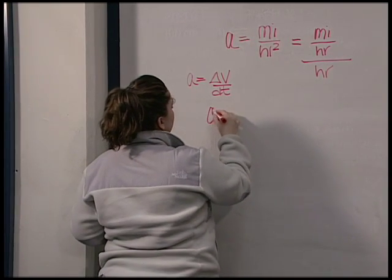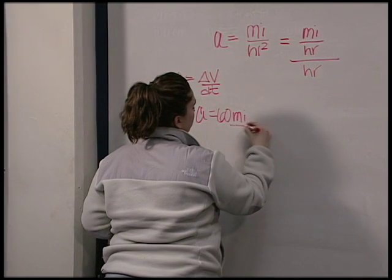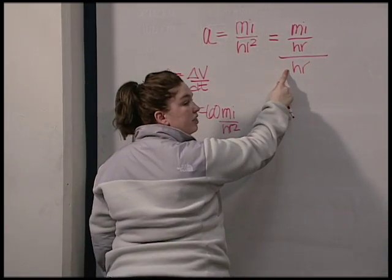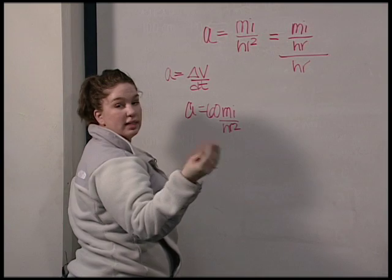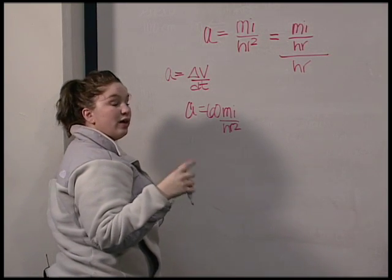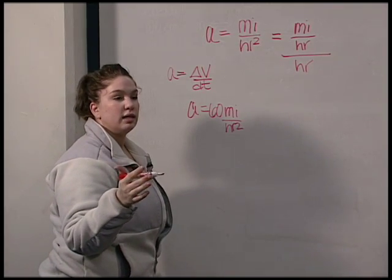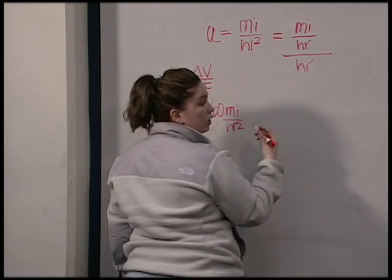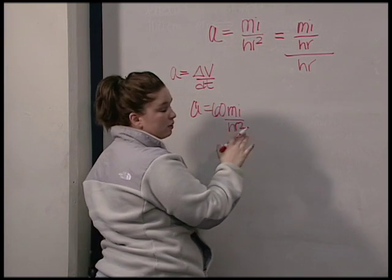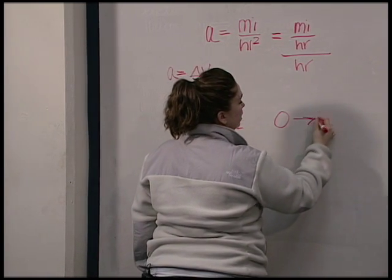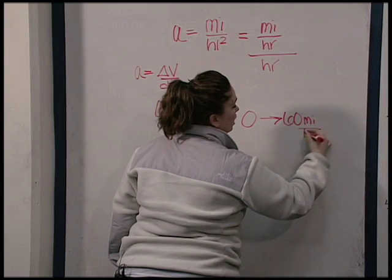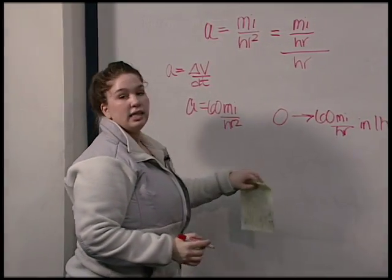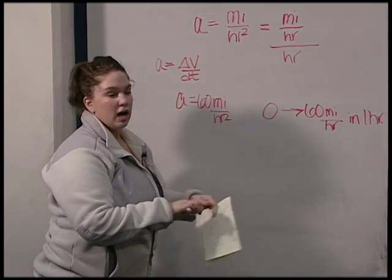So if you're going at acceleration of 60 miles per hour squared, this means that in one hour, the velocity will change by 60 miles per hour. So that means that if you're going to be changing your velocity by 60 in one hour, that means that in comparison to our Porsche here, our car that we're in, traveling at 60, accelerating at 60 miles per hour squared, will go from zero to 60 velocity in one hour. So the Porsche did it in 4.6 seconds. It takes us one hour.